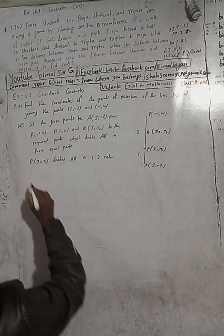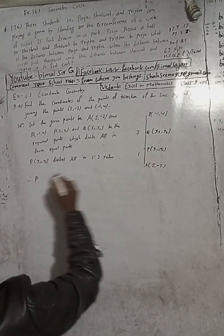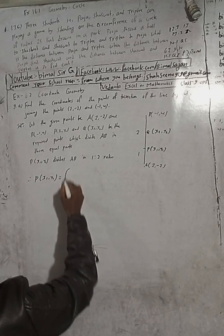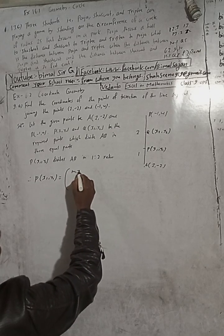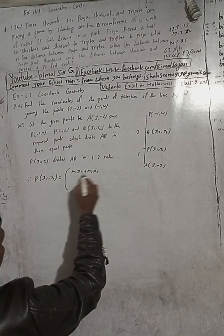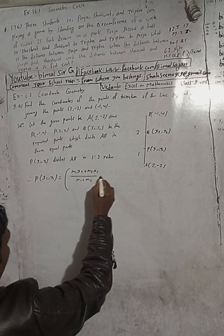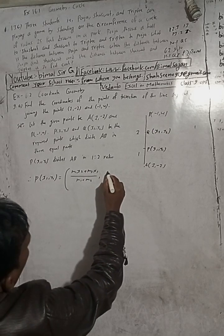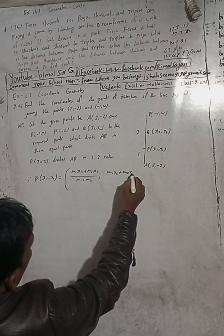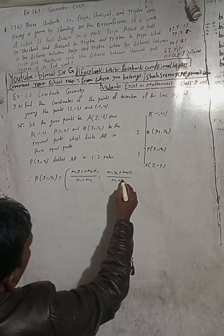This is the formula. Therefore, P(x1, y1) divides AB in one is to two. Applying the section formula: x1 = (m·x2 + n·x1) / (m + n), y1 = (m·y2 + n·y1) / (m + n).